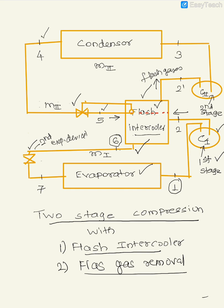The flash gases go into compressor 2. So what would be the mass balance? The mass exiting from the evaporator, we call it M1, goes to compressor 1. The mass M1 then goes to the flash intercooler. In the flash intercooler, because of the addition of flash gases from the throttling process as well as flash gases generated within the intercooler, you will have a higher mass M2.